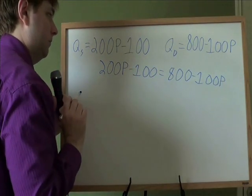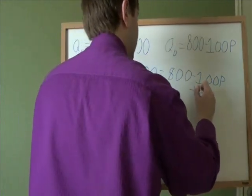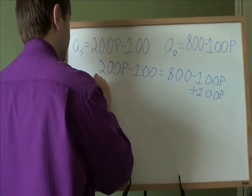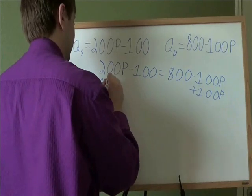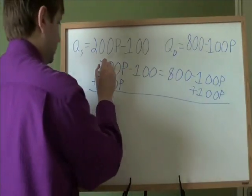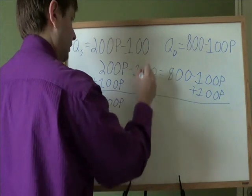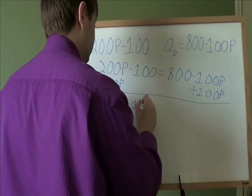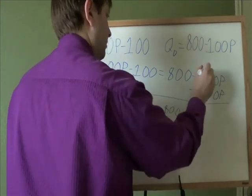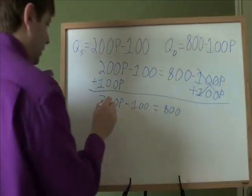So step one on this kind of problem is we need to get all the P's on the same side. So let's get rid of these negative P's. Let's say plus 100P there. And whatever we do on the right side, we need to also do on the left side, plus 100 here. So here, 200P plus 100P is 300P. This comes straight down. This comes straight down. Minus 100P and plus 100P, those cancel out.